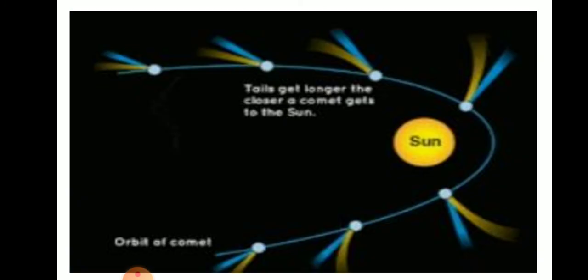Let us now discuss about comets. Comets are other heavenly bodies that orbit the sun like asteroids. They are made up of ice and dust, not rock. As a comet's orbit takes it towards the sun, the ice and dust begin to vaporize. That vaporized ice and dust becomes the comet's tail. You can see a comet even when it is very far from the earth.